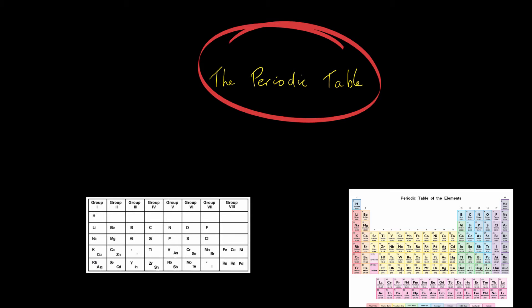The first topic we're going to speak about is the periodic table. This is one of the most important things in the whole of chemistry, because we cannot understand any reactions if we do not know what it is that is reacting. The way that we look up those things and their basic properties is via the periodic table.